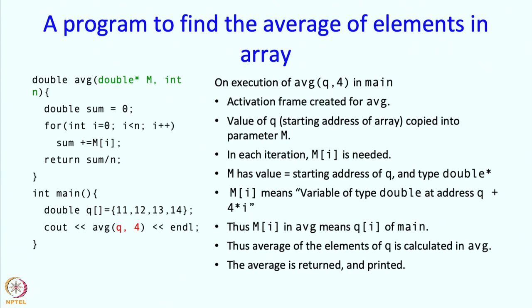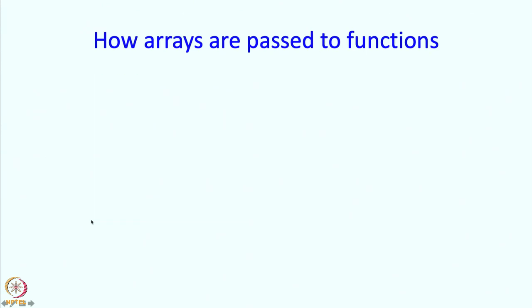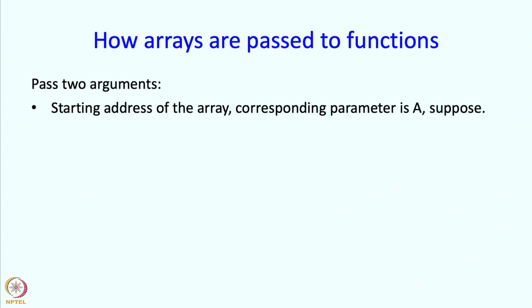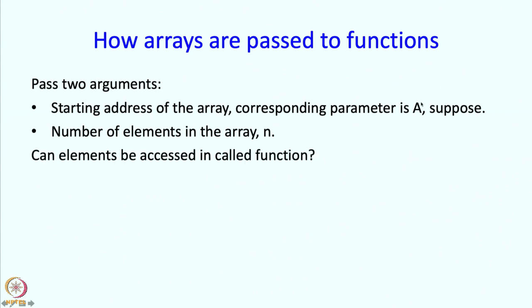And the main program will print it out. So, that is how the execution will go. So, how are arrays then passed to functions from this example? We are passing two arguments, the starting address of the array and let us say the corresponding parameter is a and the number of elements in the array.